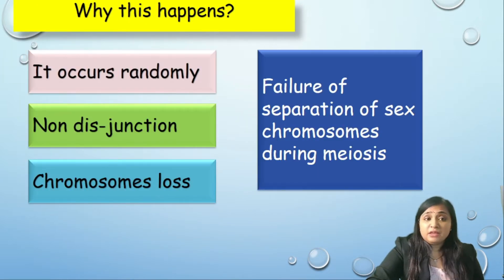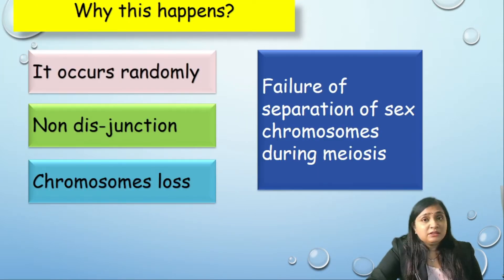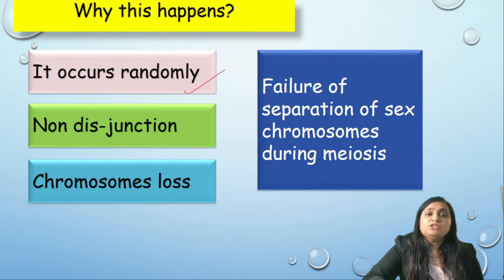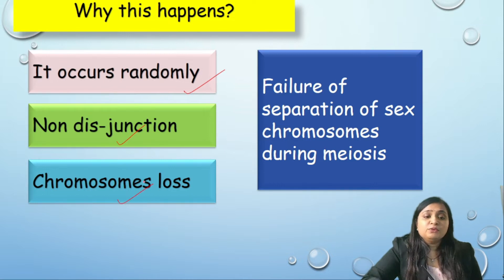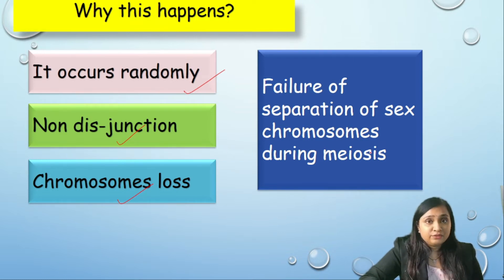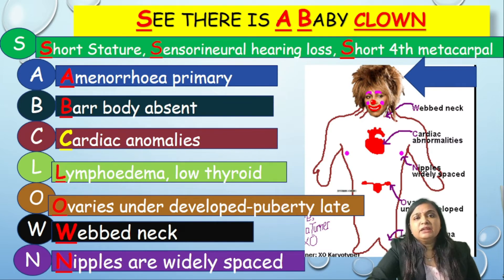The next question: why does this happen? Turner syndrome has nothing to do with maternal age — it occurs randomly. It is due to non-disjunction, and it could be because of chromosome loss or failure of separation of sex chromosomes during meiosis, which is one of the very important reasons for occurrence of Turner syndrome.